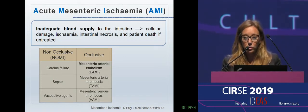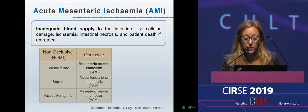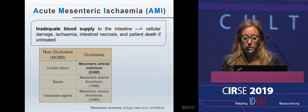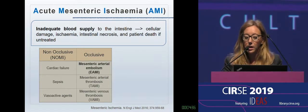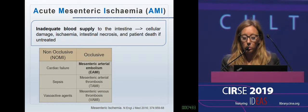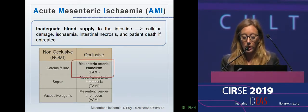Under the low perfusion of the non-occlusive form, we can find diseases like cardiac failure, sepsis, or treatment with vasoactive agents. The pathogenesis of the occlusive form can be embolic or thrombotic. The mesenteric arterial embolism is the main cause of AMI.